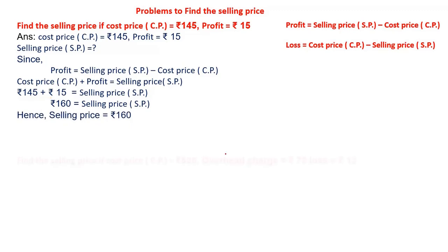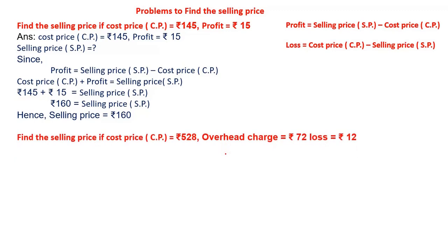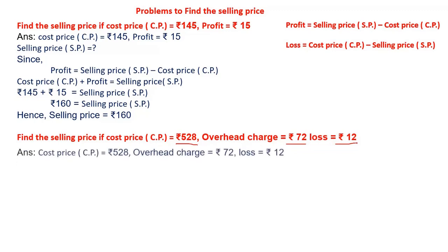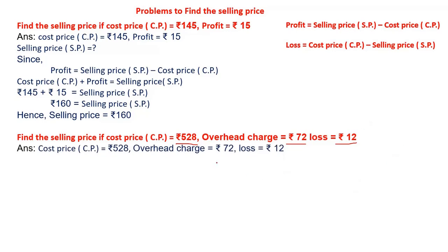Let's take one more problem on selling price. Find the selling price if cost price is rupees 528, overhead charge is rupees 72, and loss is equal to rupees 12. To calculate selling price, first we will write what they are given: cost price is equal to rupees 528, overhead charge is rupees 72, loss is equal to 12.